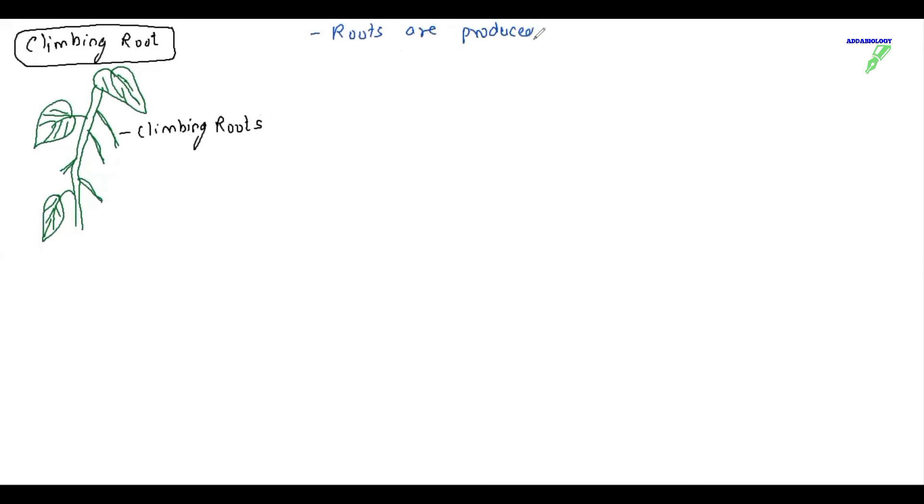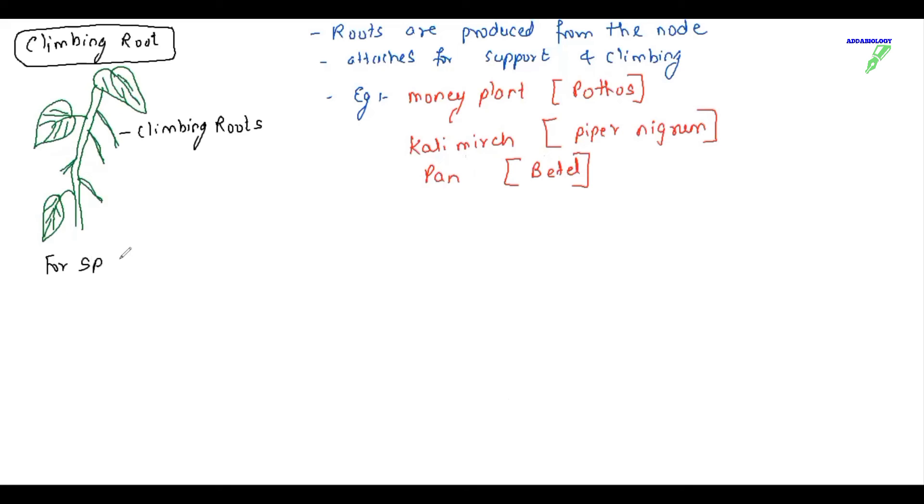The next one is climbing root. Here the root just takes the support to grow or it moves towards the sunlight. The very common example that I have seen here is money plant. We all keep money plant in the house where one end is in the bottle which is filled with water and the root keeps on moving towards the window. So roots are produced from the node and here it attaches only for support and starts moving towards the sunlight. Example is money plant, which is called Pothos. We have kali mirch, that is also called Piper nigrum. We have paan, it is called betel. So this is the modification for climbing root.